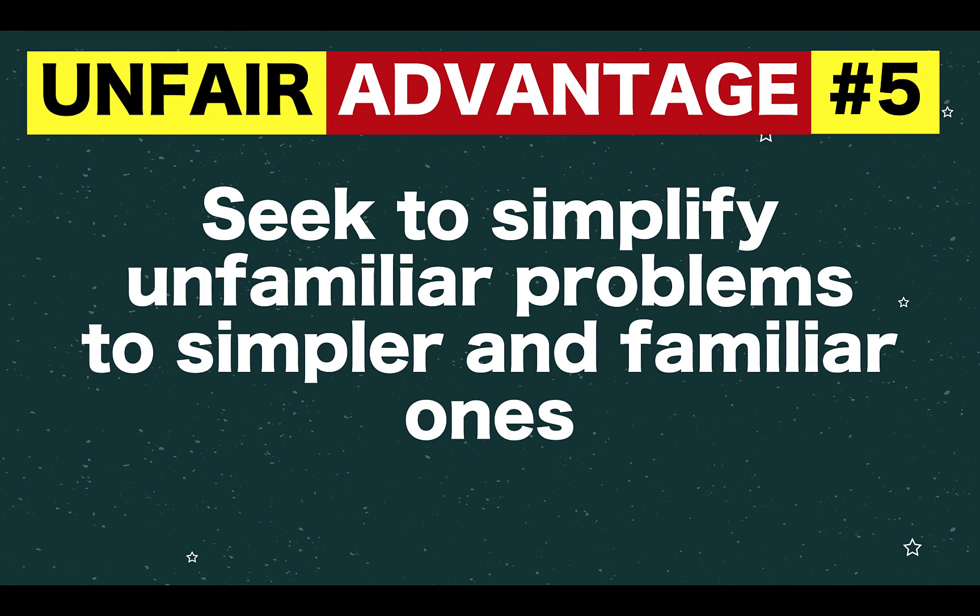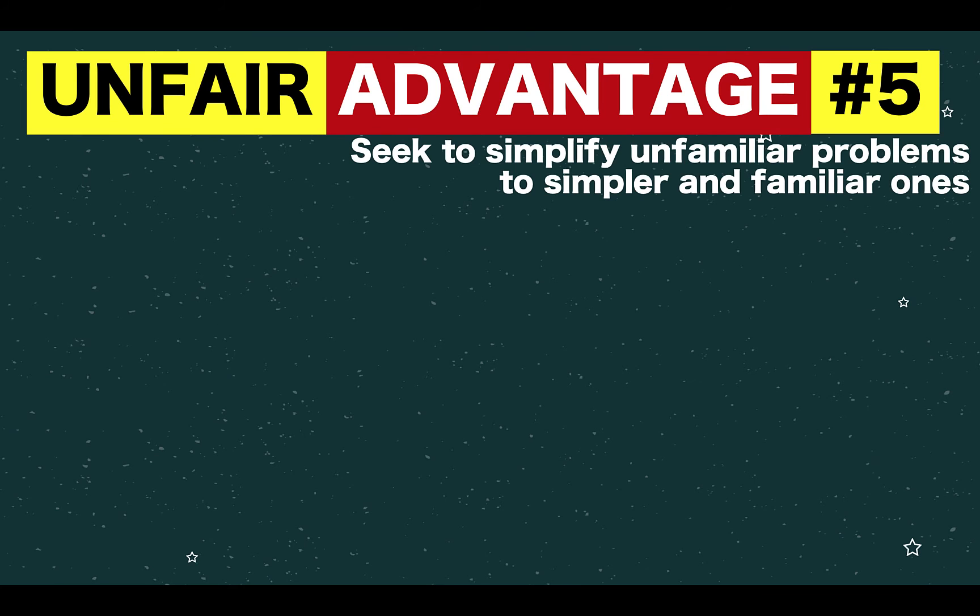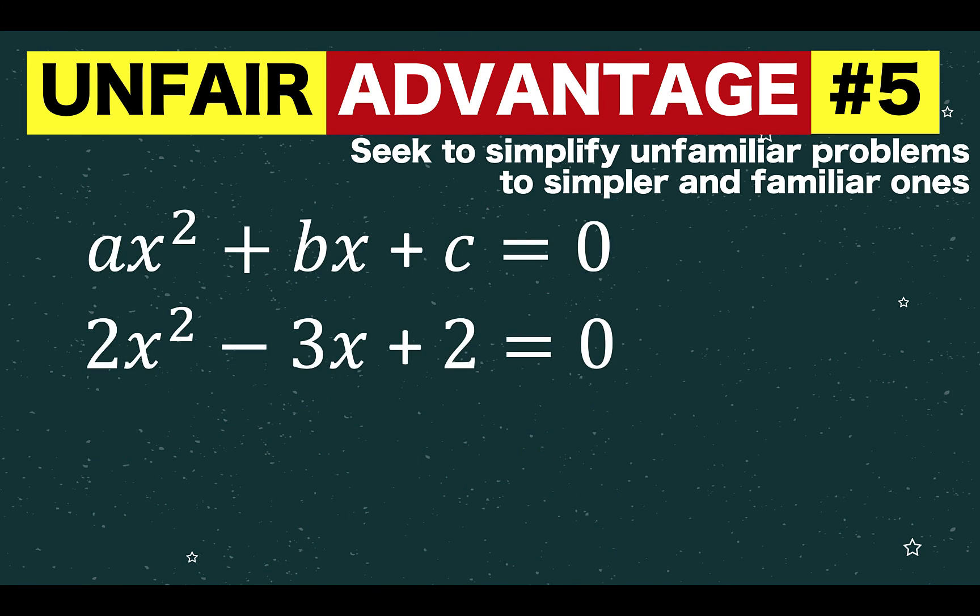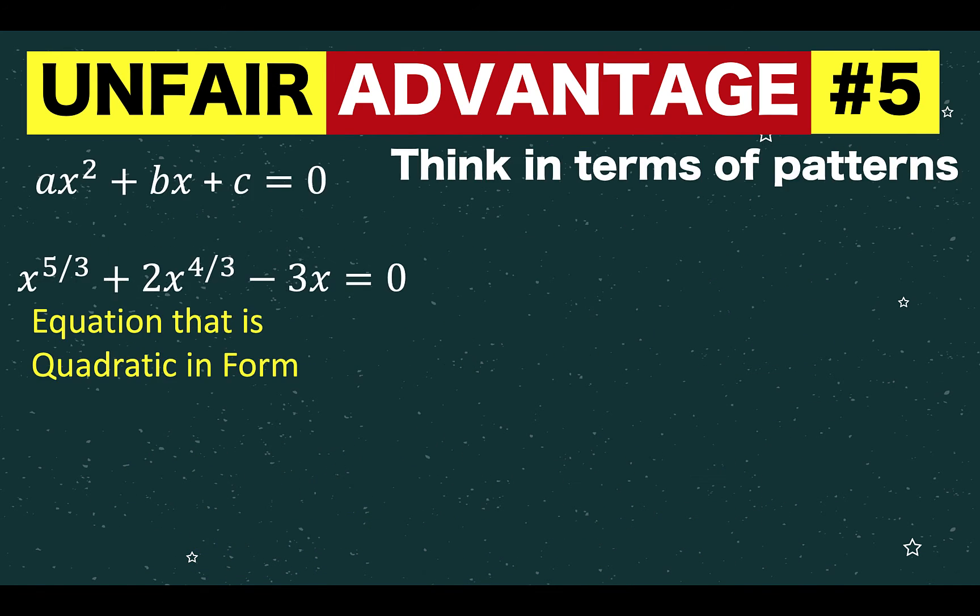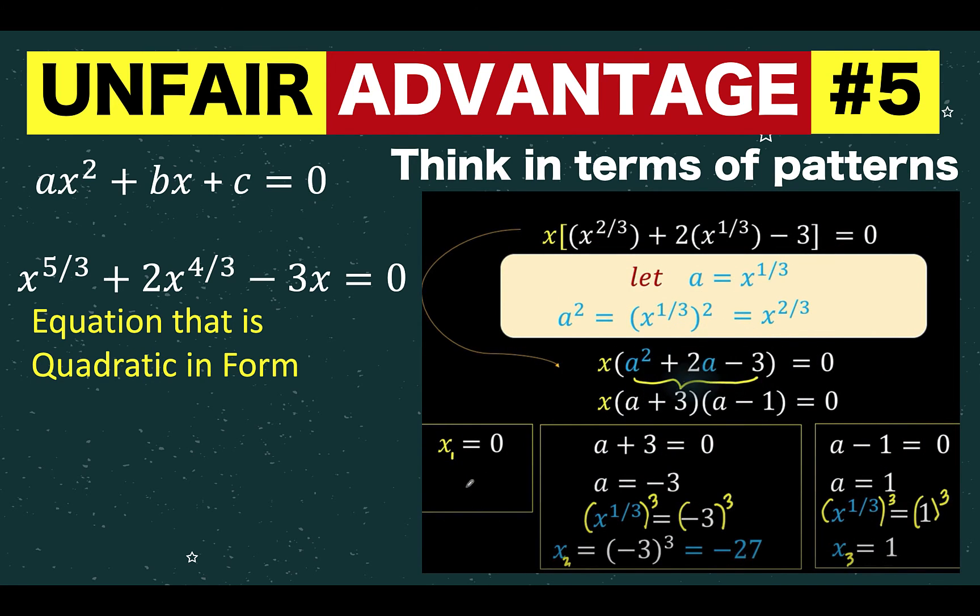Superior students simplify unfamiliar problems to simpler and familiar ones. For example, this equation is what we call as quadratic equation. When one is given this more complex equation, they would try to simplify that into something that is familiar. By applying two additional steps, this more complicated equation can be reduced to an equation similar to the first one. And since this is a familiar quadratic equation, then you can easily solve this complicated equation.